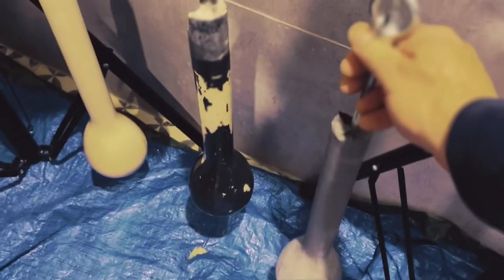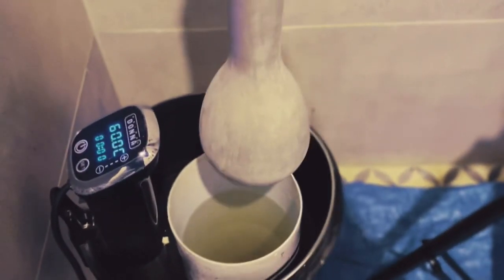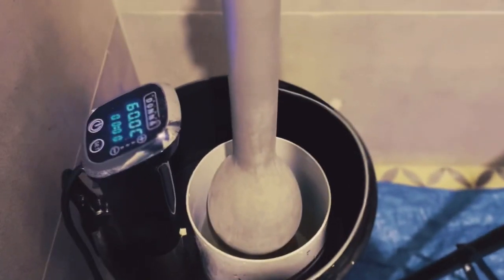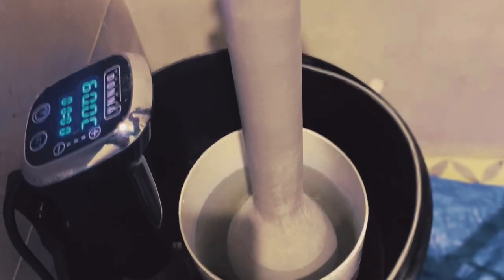The first step is that you're going to dip them into a coagulant. The coagulant is what's going to make the latex come together on the mold and actually create the balloon.